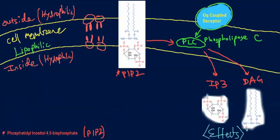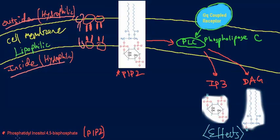Before going into the complicated mechanism, let's review the cell membrane. Starting on the left side: the outside of the cell membrane is hydrophilic, the inside is also hydrophilic, and the actual membrane interior is lipophilic. We have phospholipids with a hydrophilic head and a lipophilic tail scattered throughout.